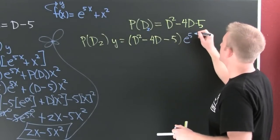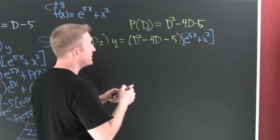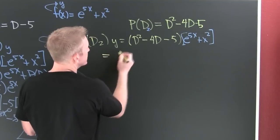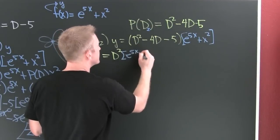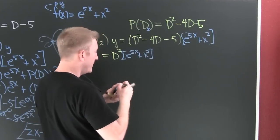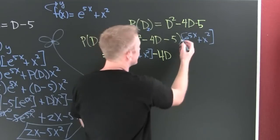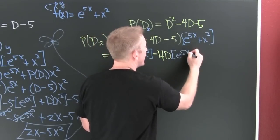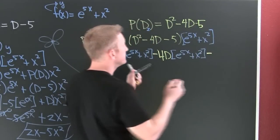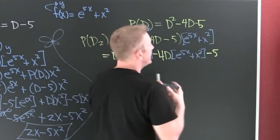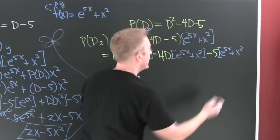Let's use that linearity property or distributive property. We're going to see two derivatives of e to the 5x plus x squared, and then we're going to subtract off four times one derivative of e to the 5x plus x squared, and then we're going to subtract off five times our function, five times e to the 5x plus x squared.